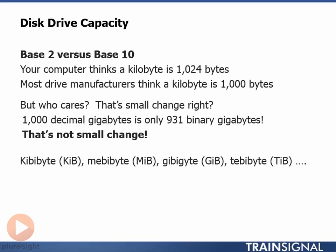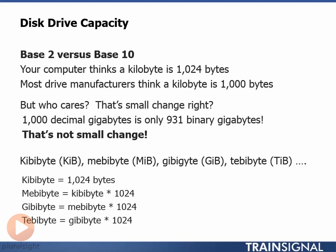These all adhere strictly to the binary system. As we can see at the bottom of the slide: a kibibyte is 1024 bytes, a mebibyte is 1024 kibibytes, a gibibyte is 1024 mebibytes, and a tebibyte is 1024 gibibytes. There's no ambiguity about whether a value is 1000 or 1024 — these units of measure are strict. The only downside is that not many vendors use them. So this confusion between 1000 and 1024 as a multiple is definitely the major cause of discrepancy when talking about disk drive capacities.